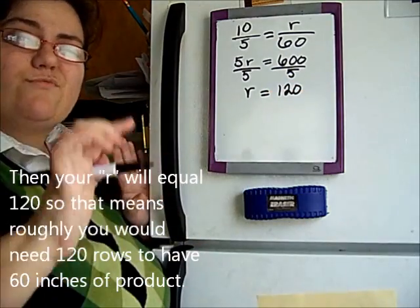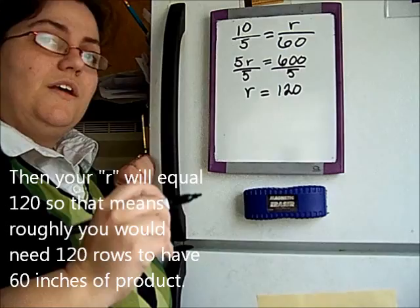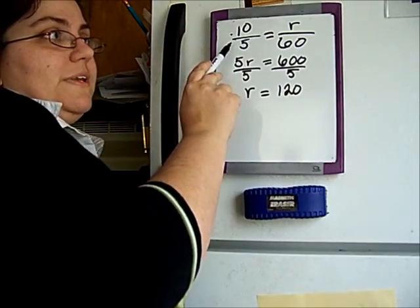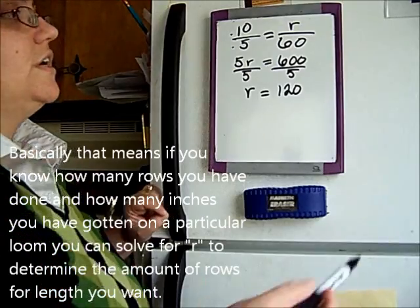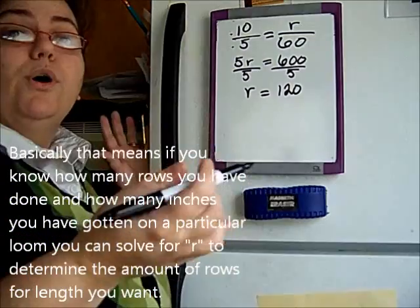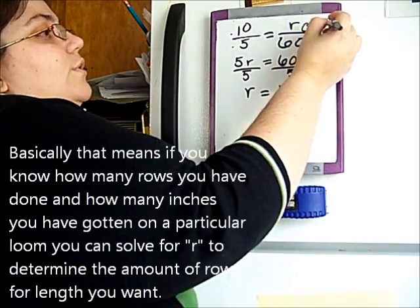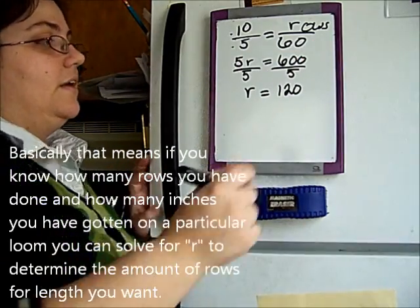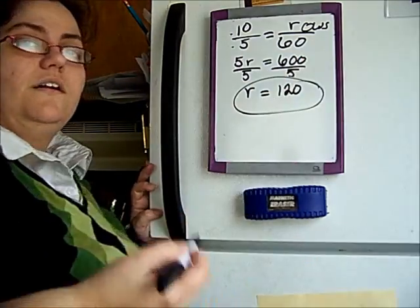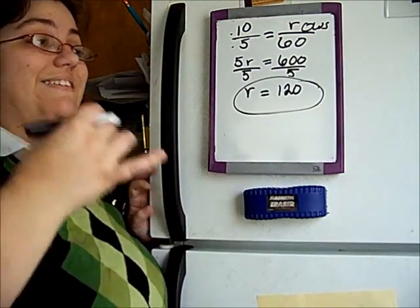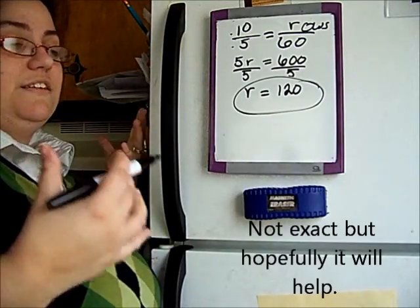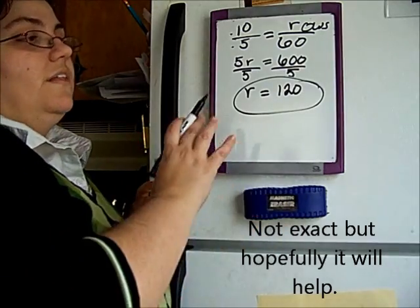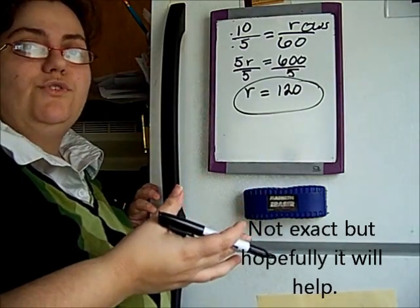So that means roughly, give or take, it may not be an exact science, but it's saying that basically, if you know how many rows you've done and how many inches you've got out of how many rows, then you can solve for your R, your rows, with how many inches you want the product to roughly be, and then this will give you an idea of how long you need the product to be. It's not exact science, but at least gives you an idea, because that way you'll know if you're doing a scarf or whatever, that you'll have an idea of how many rows you need to do.